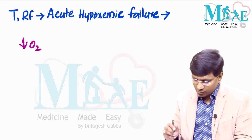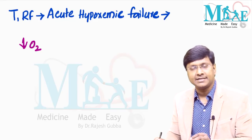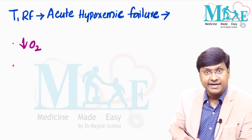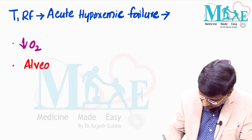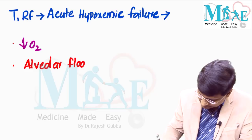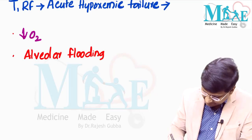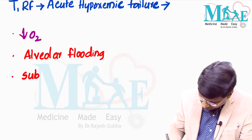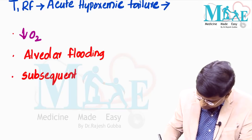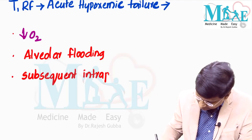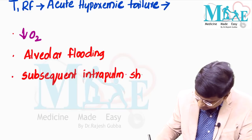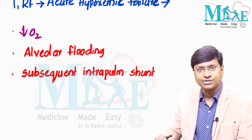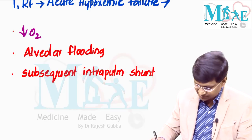The reason why the individual has decreased oxygen levels is mainly because of alveolar flooding and the subsequent intrapulmonary shunt. Because of these two reasons, the individual will have hypoxemia.